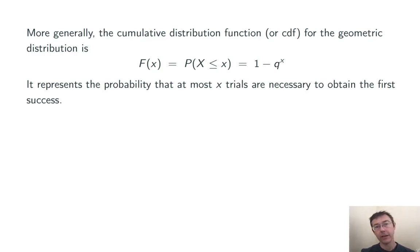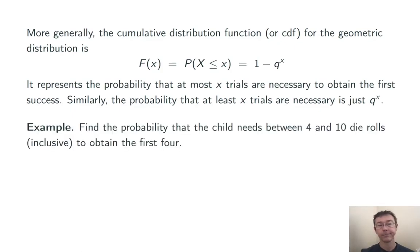We can generalize this thinking to get the cumulative distribution function, or CDF, for any geometric distribution. It's 1 minus q to the x. This is, again, representing the probability that at most x trials are necessary to obtain the first success. So just by looking at this CDF, we can see that the probability that at least x trials are needed is q to the x.